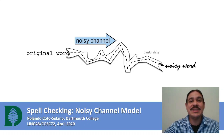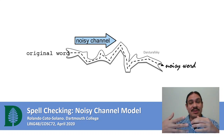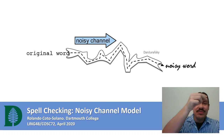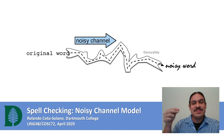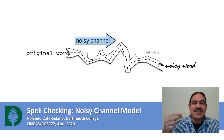We will take a second look at spell checking and use an algorithm called the noisy channel model. In this model, we assume that every word could potentially be a spelling mistake, and we're going to use probabilities to suggest corrections.